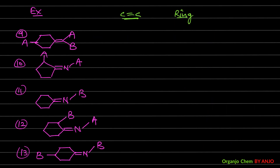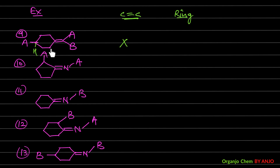Example 9: One SP2 carbon has two different groups, but the other SP2 carbon's two parts are identical, so GI from C=C is not possible. For the cyclic part, one carbon has A and H — but the remaining four carbons all have two identical H atoms. We need at least two disubstituted SP3 carbons; only one is found. So compound 9 cannot show GI from the ring either.